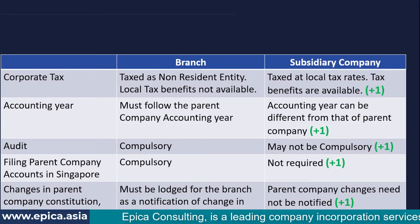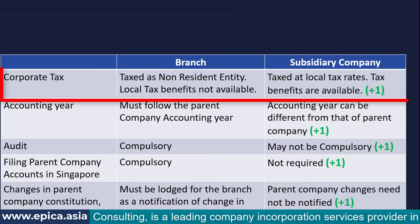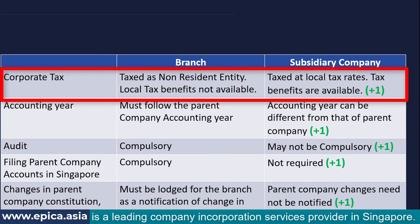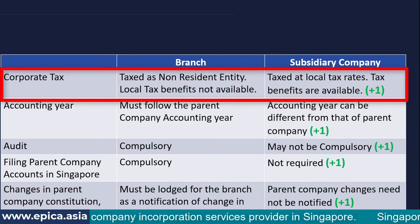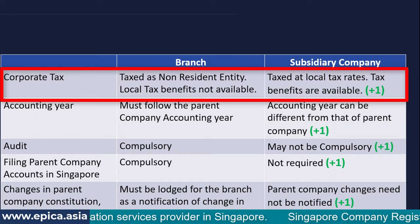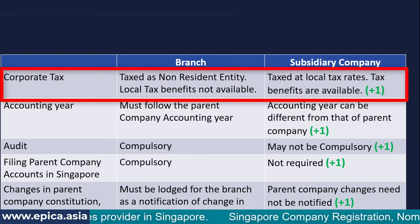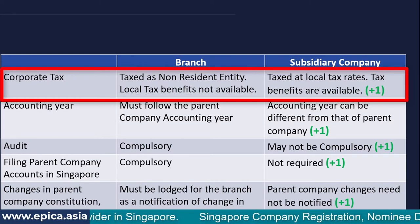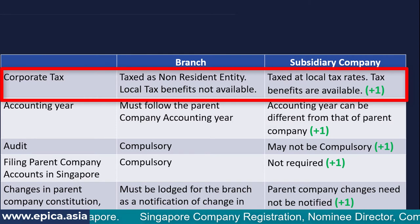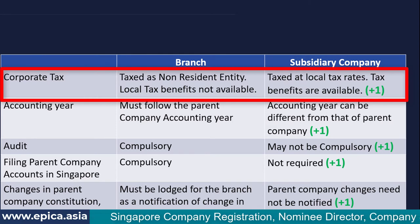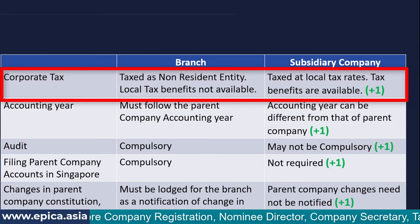When it comes to corporate taxes, a branch is considered a non-resident entity and the tax exemptions available for existing as well as new startups are not available for the branch. So obviously the subsidiary scores one point here.